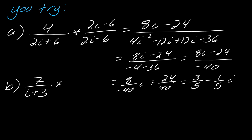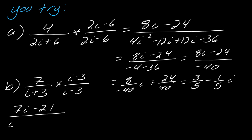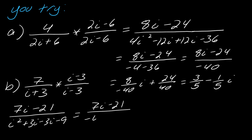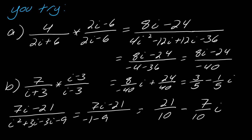For the second one, I multiply top and bottom by i minus 3. This gives 7i minus 21 over i squared plus 3i minus 3i minus 9. So I get 7i minus 21 over negative 1 minus 9. Ultimately this gives negative 21 over negative 10, which I write as 21 over 10, minus 7 over 10 times i. So that would be it for that one.